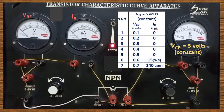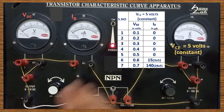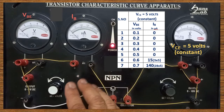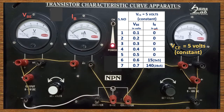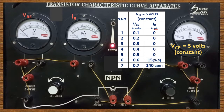Now we are going to learn how to measure the value of input impedance of the transistor. Input impedance is one of the important parameters of the transistor that can be measured by drawing the graph called input characteristics curve.